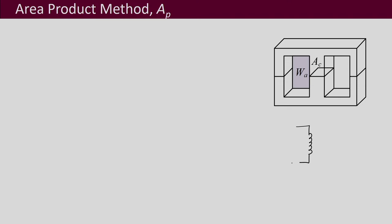Let us say we have a transformer where on the primary side the voltage is V1 and on the secondary side the voltage is V2. The current on the primary side is I1 and on the secondary side it is I2. This transformer is made using a core with primary and secondary windings wound on it. We have the window area and the cross-sectional area of the core, and both of these multiplied together give the area product, which we have to find out.